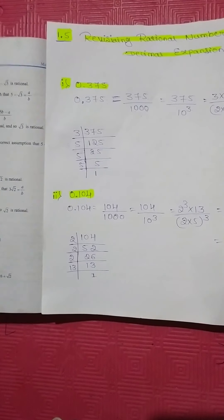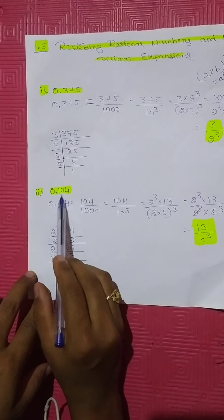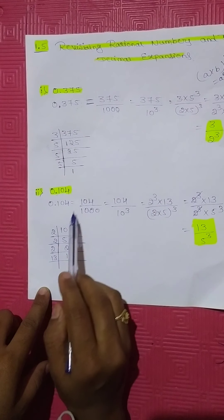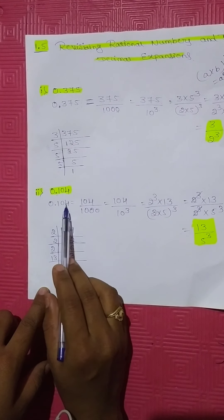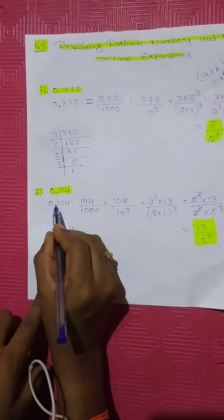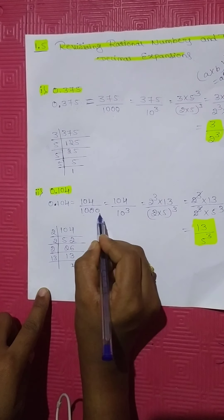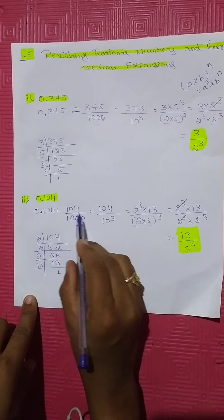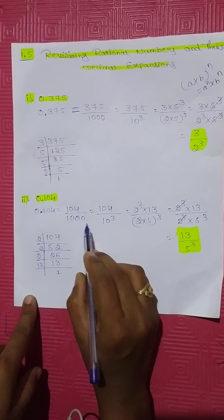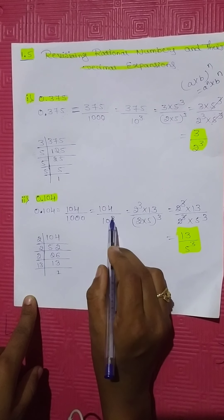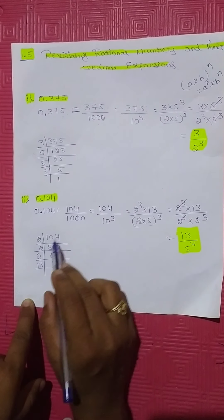Second example: 0.104. This can be written as 0.104 equal to 104 divided by 1000, since there are 3 numbers after the decimal point. So the denominator is 10 to the power of 3. Now consider the numerator 104.